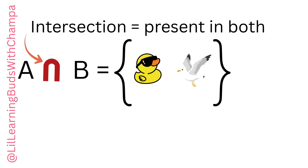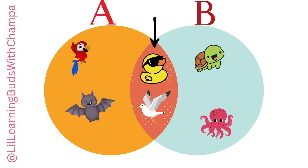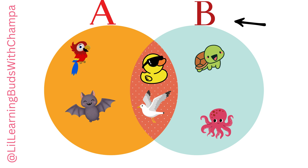Now it's Intersection. A intersection B means which animals are present in both sets — the common things. Duck is common and Seagull is common. So A intersection B is Duck and Seagull. Duck and Seagull go in the center — the common things between A and B. Set A has unique items: Parrot and Bat, the flying animals. Set B has unique items: Turtle and Octopus, which swim in the water. The middle part — the intersection — has the common animals which can do both flying and swimming.